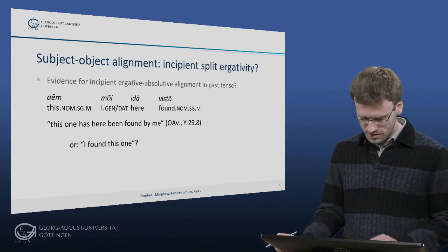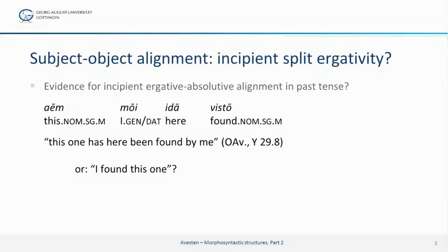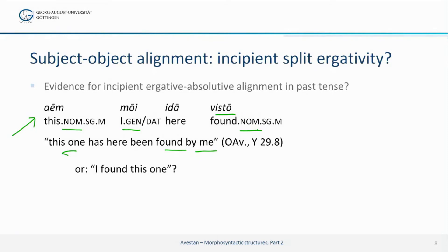For example, one could argue that a sentence like 'im, moi, ida, visto' — 'this one' (im, in a nominative), 'found' (visto, again in a nominative), 'by me' (moi, or 'of me') — one could argue that such a sentence, which includes a verbal adjective in -ta acting as its predicate, simply means 'I found this one.'